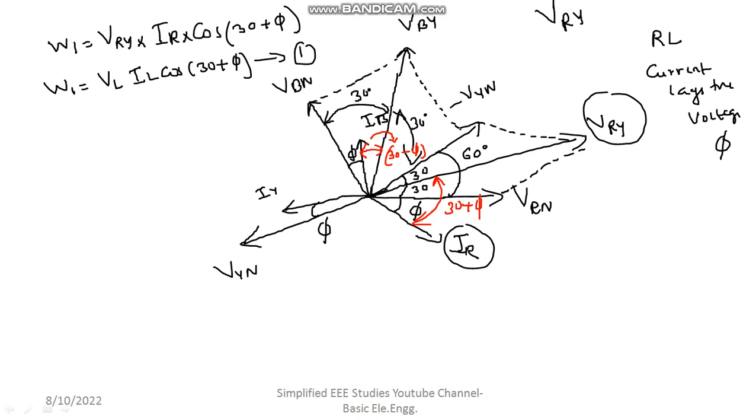Moving on to the second part. W2 is nothing but, the line voltage is VBY. VBY. Line current is IB. Cos φ. What is the angle? Angle will be 30 minus φ. I have already explained how 30 minus φ has come out here. Now, that can be elaborated as, instead of VBY let me write line voltage VL. Instead of IB let me write line current IL. Cos 30 minus φ. So please call it as equation number 2.